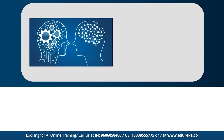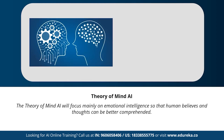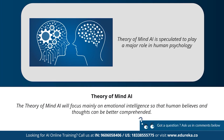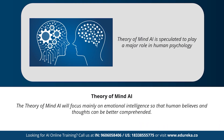Next we have theory of mind artificial intelligence. Theory of mind AI is a more advanced type of artificial intelligence speculated to play a very important role in psychology. This type of AI will mainly focus on emotional intelligence so that human beliefs and thoughts can be better comprehended. Theory of mind AI has not been fully developed yet, but rigorous research is happening in this area.